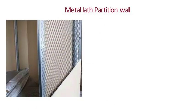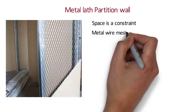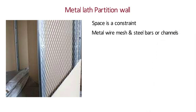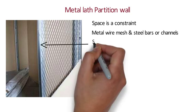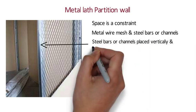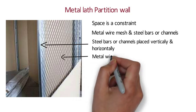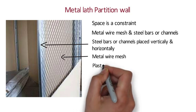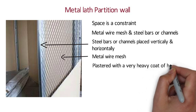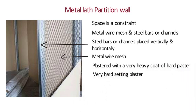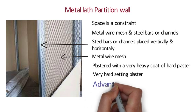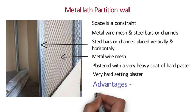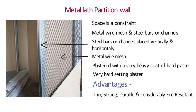Metal Lath Partition Wall: Where space is a constraint, this type of partition can be used. A metal wire mesh and steel bars or channels are used. Steel bars or channels are placed vertically and horizontally for studding, a metal wire mesh is jointed on the steel bars or channels, and then the wire mesh is plastered with a very heavy coat of hard plaster. It is necessary to use a very hard-setting plaster. The advantages are they are thin, strong, durable and considerably fire resistant.